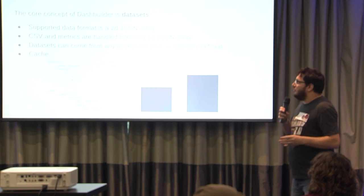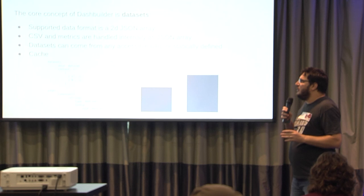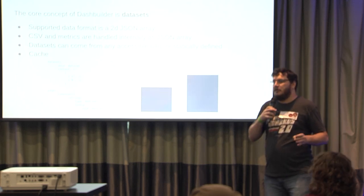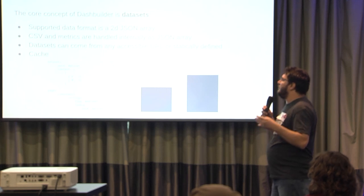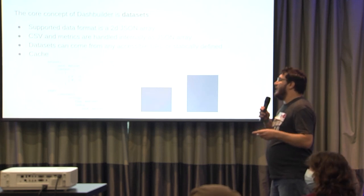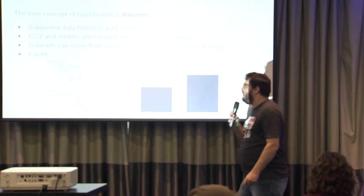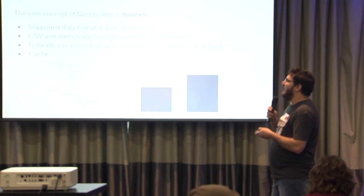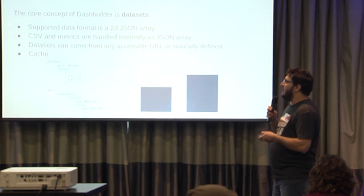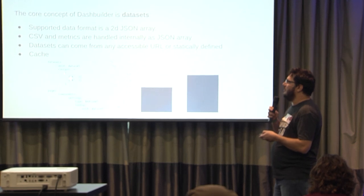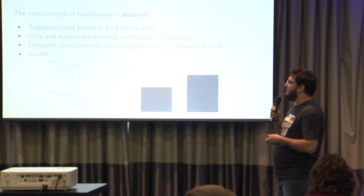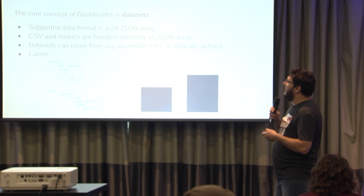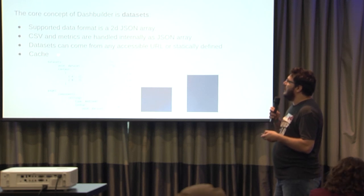So how do we do this? Basically we start by creating our dataset. The dataset is the core concept of Dash Builder. Datasets can come from JSON or CSVs, and we can also declare them inline inside the YML. Any accessible URL will work. We can also cache the data — so if you have a big JSON, you can load it entirely into memory and then Dash Builder will work entirely offline. It just needs one request to get the data and it works in the browser.